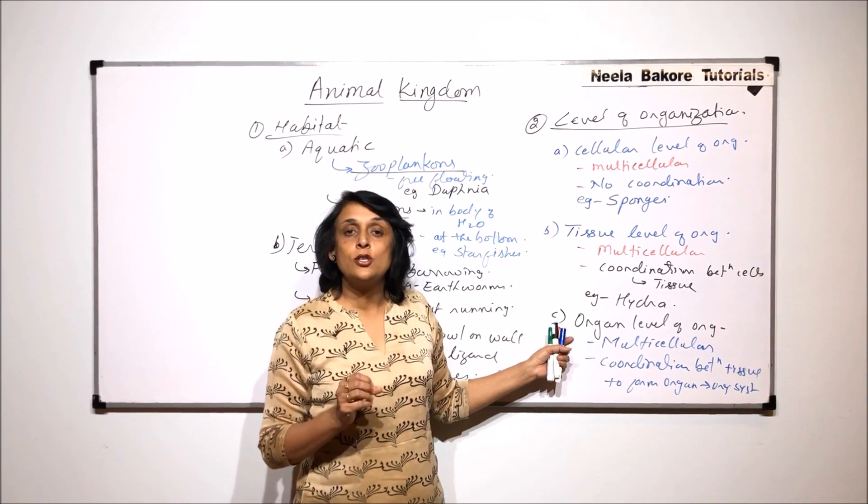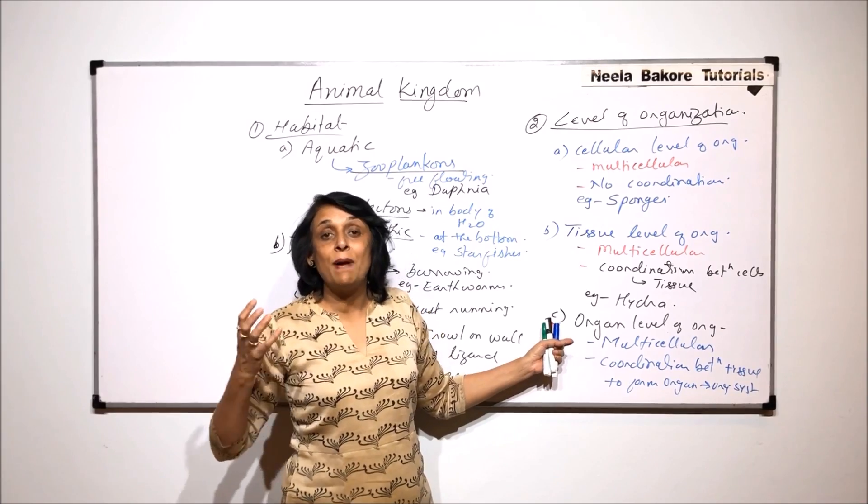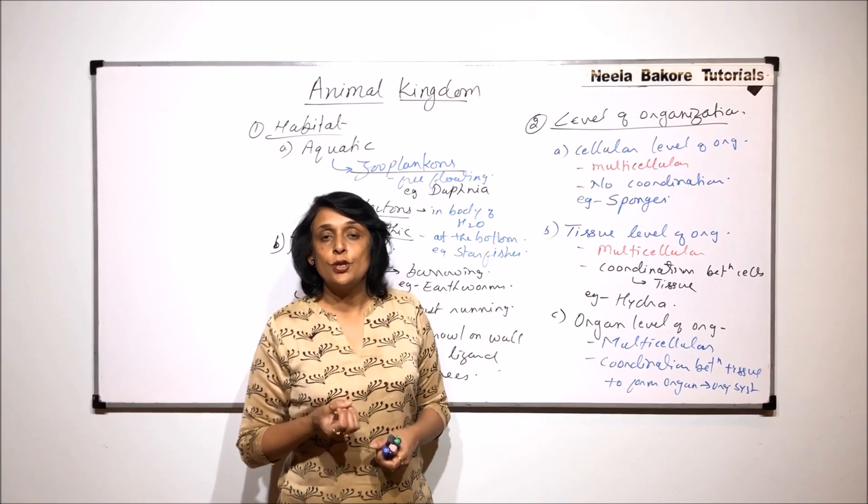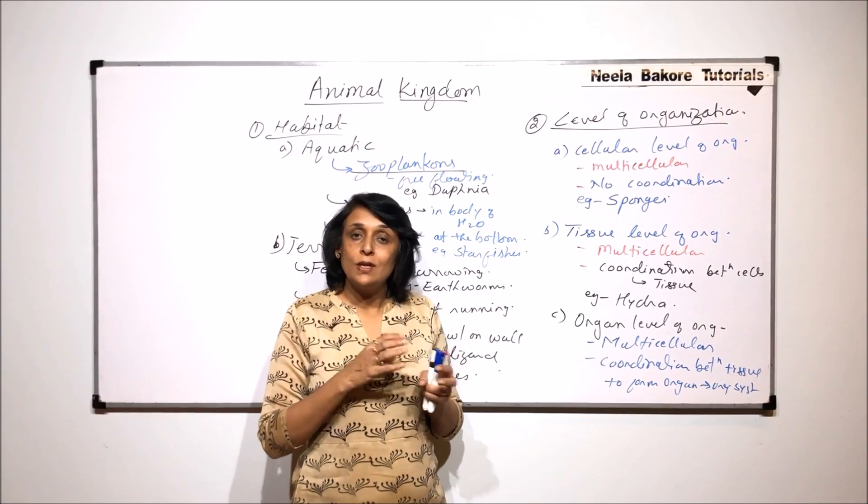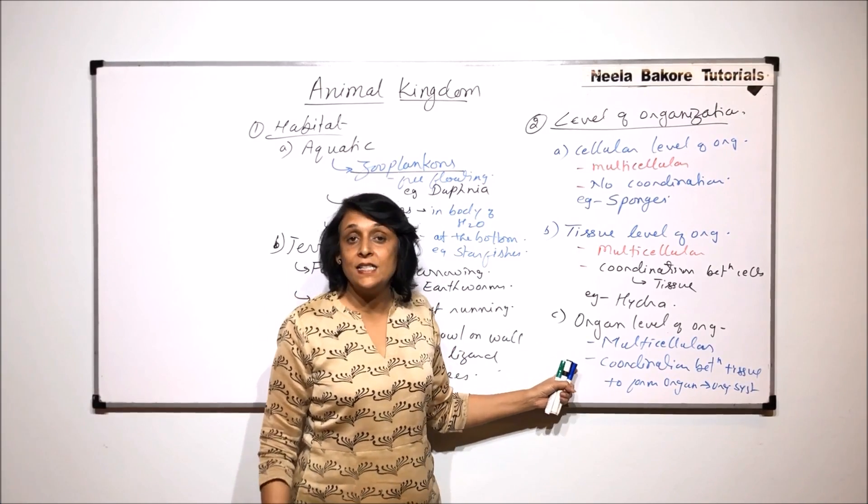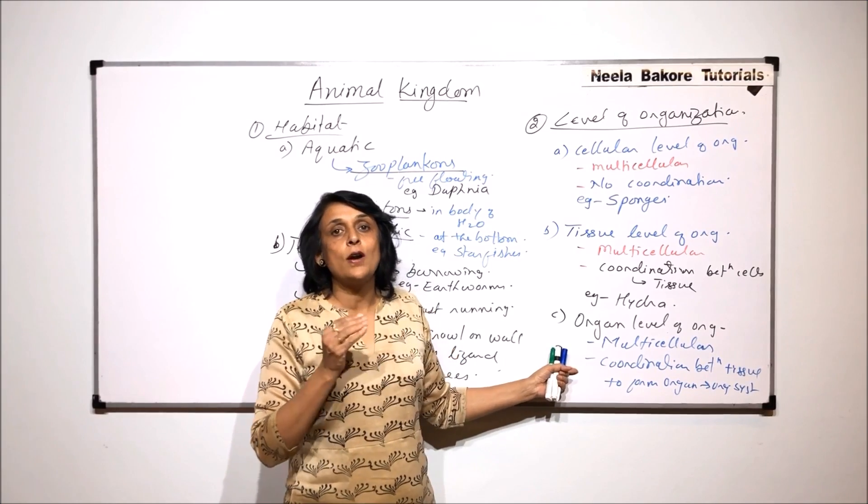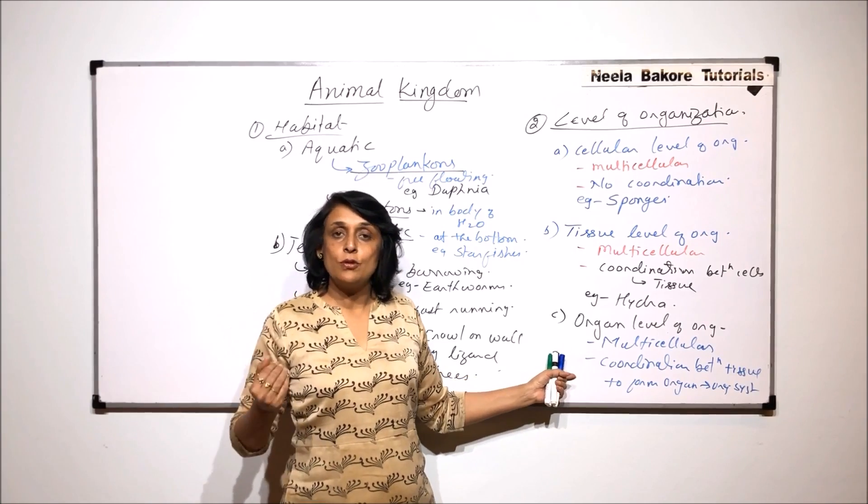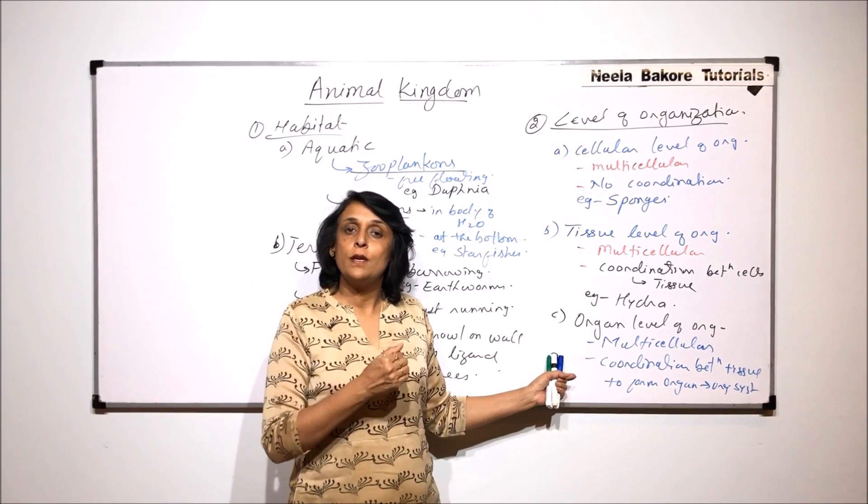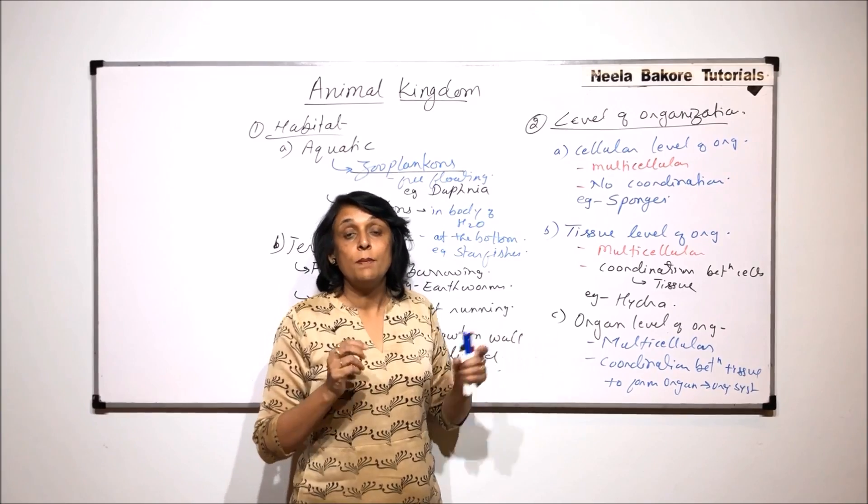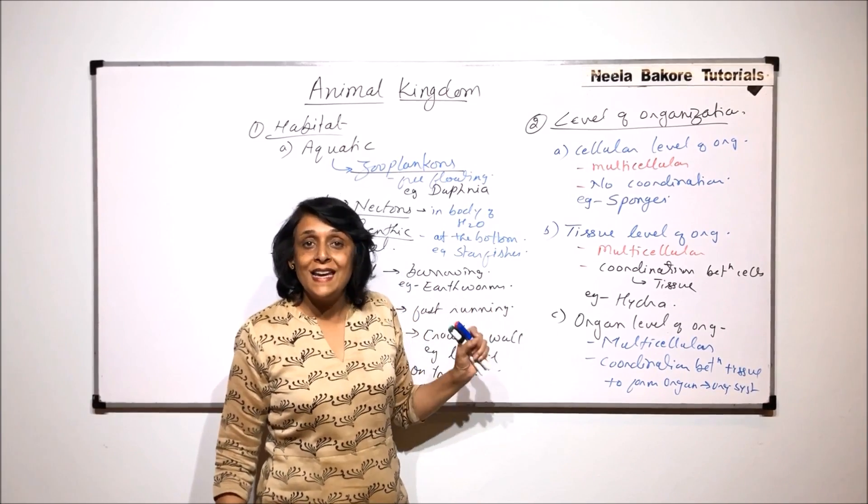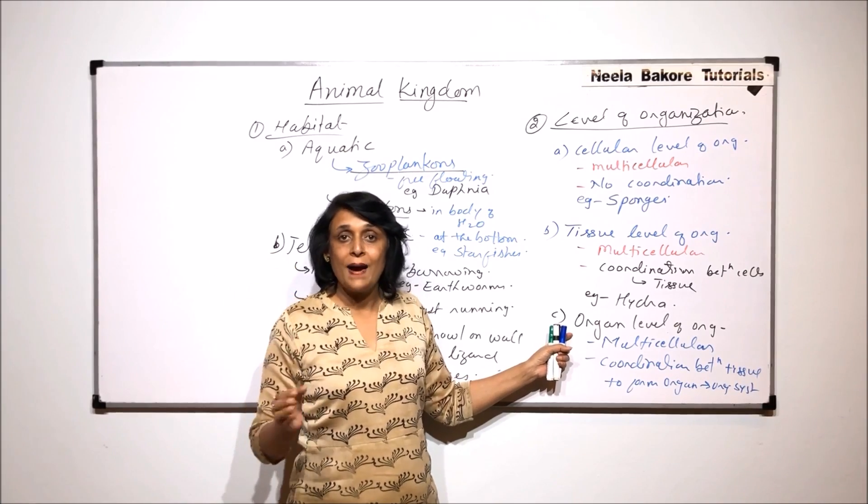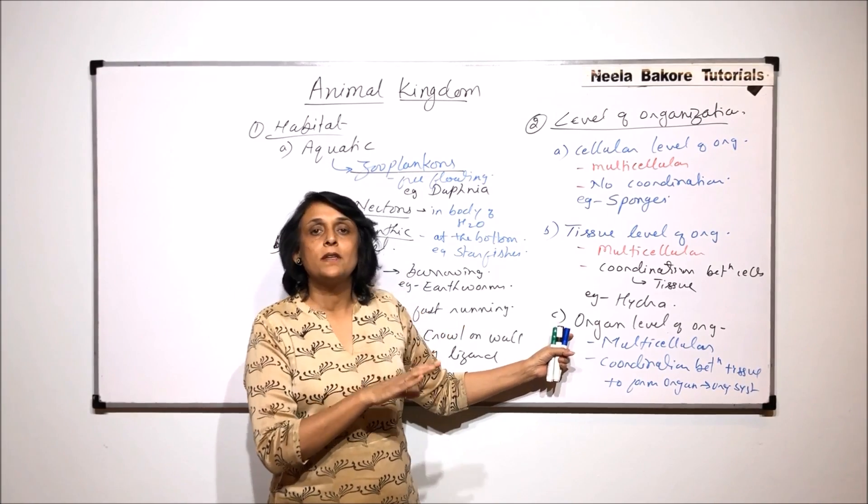Whereas in case of organ system, excretion, elimination of nitrogenous waste, will be done by a particular system, that is excretory system. Obtaining nutrition, absorption, utilizing it, that is done by digestive system. So digestive system need not worry about how to eliminate the nitrogenous waste, and the excretory system need not worry about how to obtain nourishment. Because there is a clear division of labor. That means every system has been assigned a job. Other system doesn't bother about that thing.